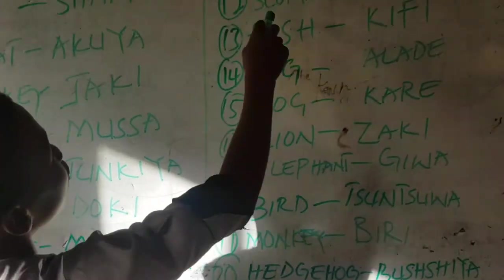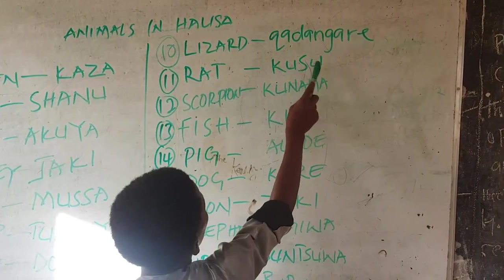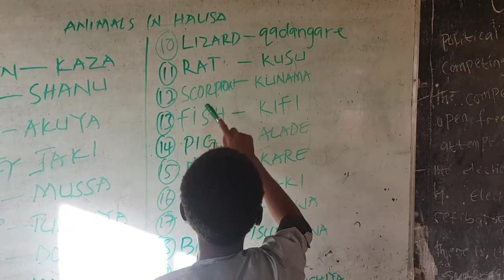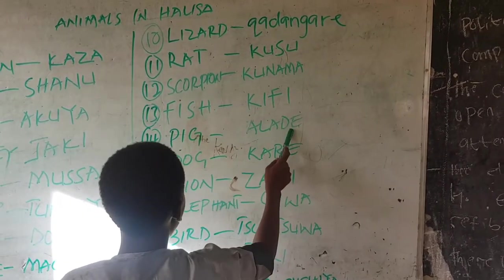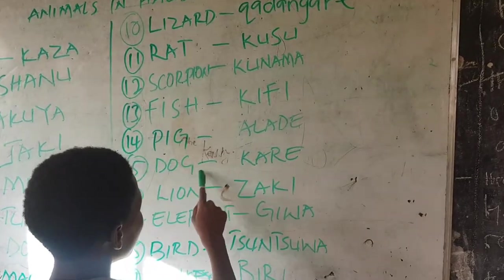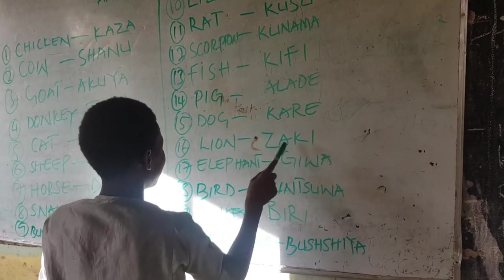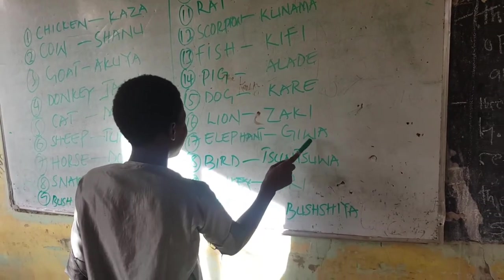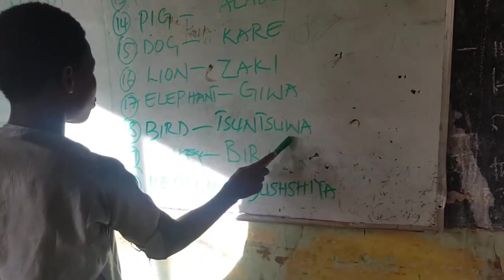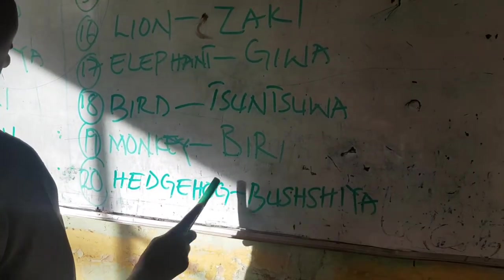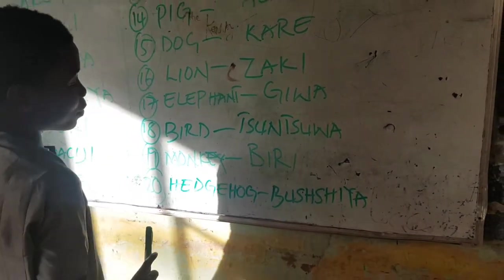Lizard, kadangari. Rat, kusu. Scorpion, kunama. Fish, kifi. Pig, aladi. Dog, kare. Lion, zaki. Elephant, giwa. Bird, sunsua. Monkey, biri. Hedgehog, bushia.